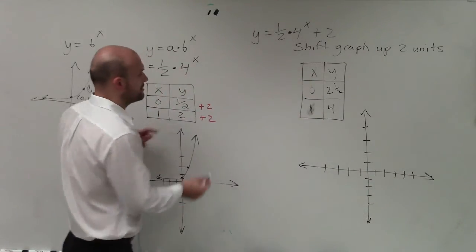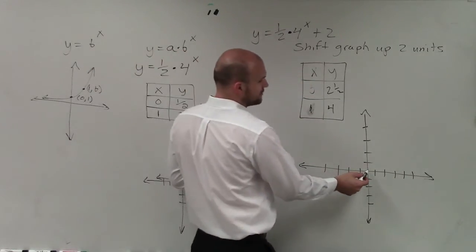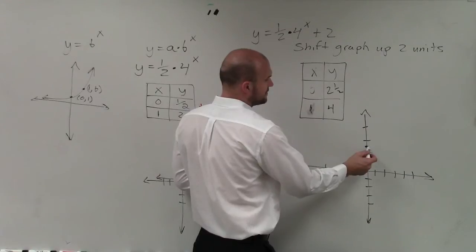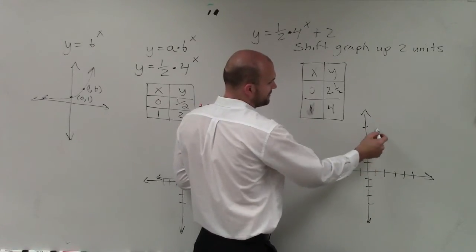Okay, so now, I'm going to go ahead and plot these new coordinates. So I'm going to go over 0, up 2 and 1 half, and 1 over 4. 1, 2, 3, 4.